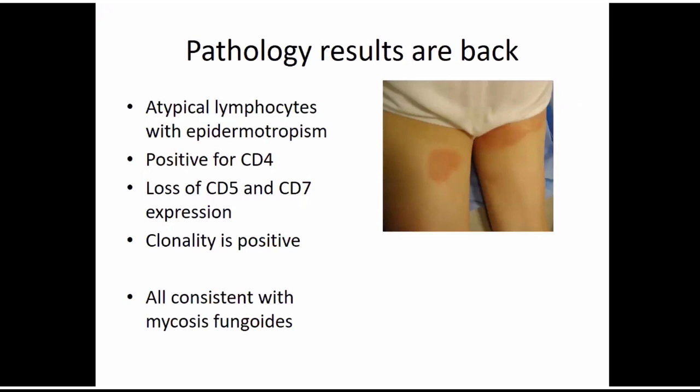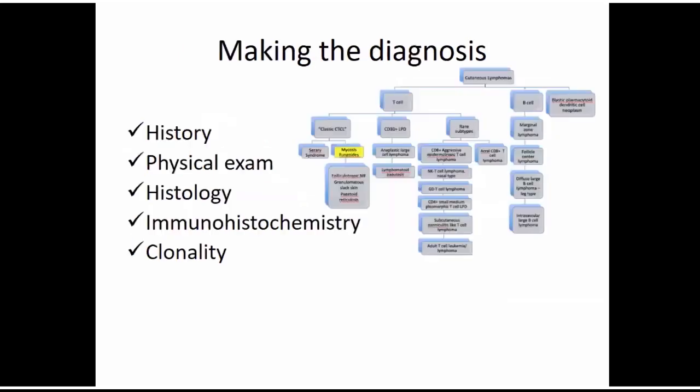For this particular example, we saw that the cells looked a little atypical. They were CD4 positive, so we know this is a T cell process. They've lost CD5 and CD7, and the clonality was positive. All that is a really nice pathology picture for mycosis fungoides. So when you put his history, his exam, and all the histology and pathology together, he falls into that bucket.